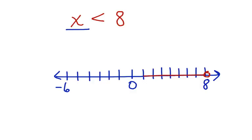And I am going to draw my arrow going this way showing that any value less than 8 and not including 8 will work in this inequality. This is called graphing the solution of an inequality.